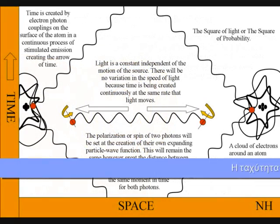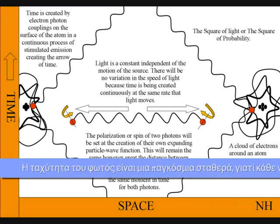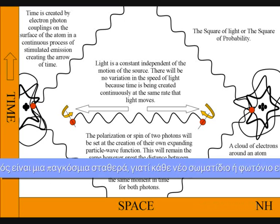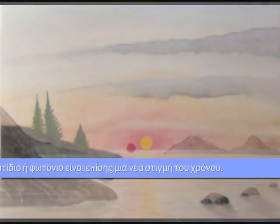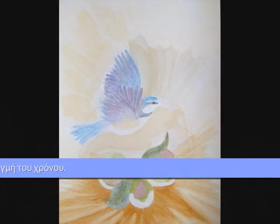It is because this process is at the same rate that light moves that the speed of light between the atoms will always be a universal constant, independent of the motion of the source. This can also explain why light is so beautiful when it strikes an object. It is because we are looking at a moment of purification of time and space.